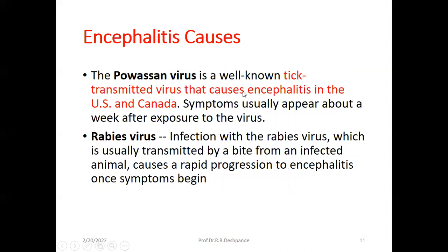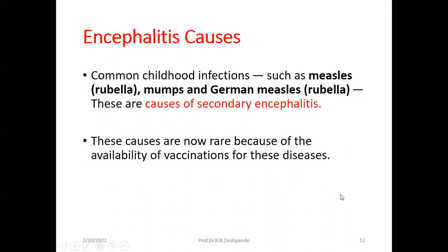The Powassan virus is a well-known tick-transmitted virus which causes encephalitis in the United States and Canada. Symptoms usually appear about a week after exposure. The rabies virus, usually transmitted by a bite from an infected animal, causes a rapid progression to encephalitis once symptoms begin.